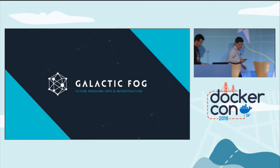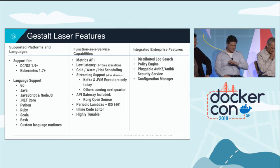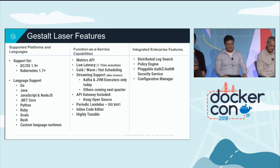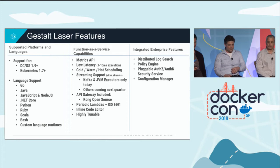Our platform is called Gestalt — it's part of a bigger platform that does container management, API, and pretty much any kind of enterprise cloud-native management. Laser is our function-as-a-service implementation; it stands for Lambda Application Server. We're a hybrid platform — we run inside Kubernetes, we run in things like DCOS. It's flexible, and we have really broad language support. We support advanced features including a metrics API and we're very low latency.